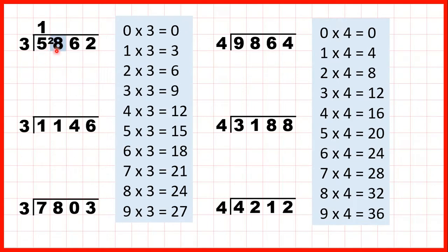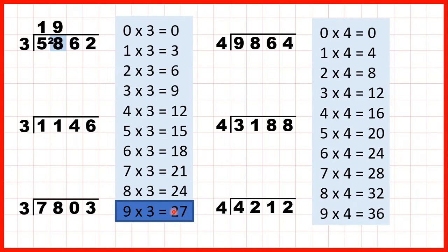So now when we go to the next digit we have a 2 in front of it, so we need to do 28 divided by 3. We're looking for a number in the 3 times table which is 28 or less. Well 9 times 3 is 27, and because it's 9 times 3 the 9 goes in our answer line. But 9 times 3 is only 27 and we're dividing 28. To get to 28 we need to count on 1 from 27, so 1 is our remainder, because 27 plus 1 is 28.